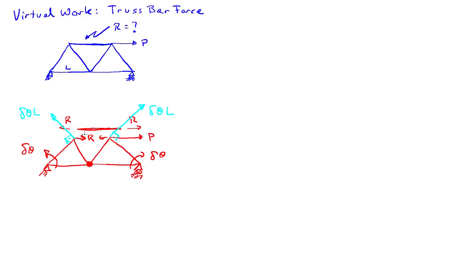So to write down the external virtual work, I have P times delta theta. And then the motion in the direction of P is L cosine of 30 degrees. So that's just root 3 over 2. And then I also have the virtual work associated with this force here acting on both sides.